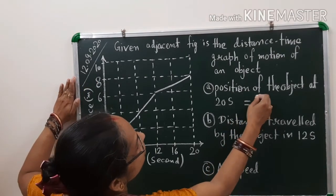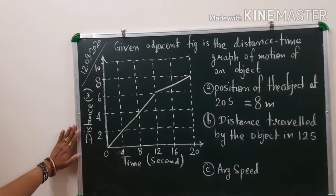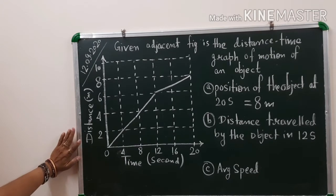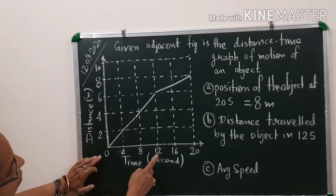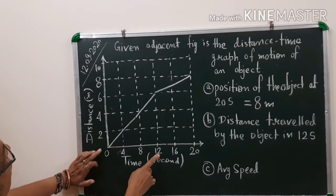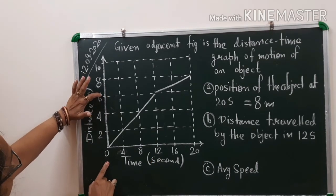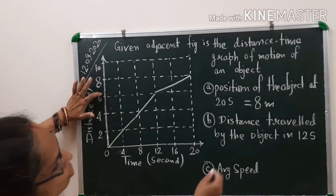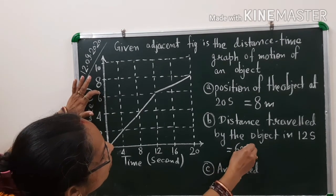For the second part, we check the distance covered at 12 seconds. Drawing the corresponding lines, the distance covered at 12 seconds reads 6 on the axis. So the answer is 6 meters.